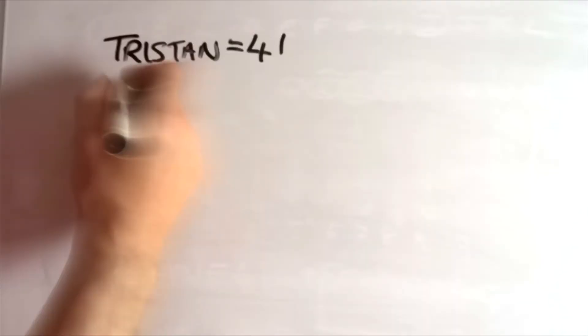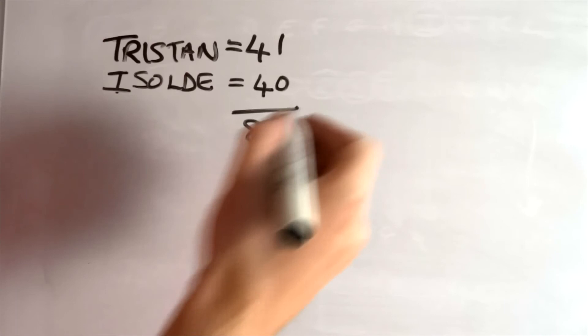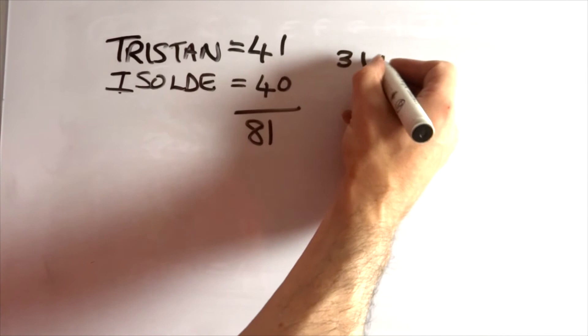Tristan equals 41. And if you remember the Tristan chords, the first Tristan chord, 31 plus 31 plus 19 equals 81.